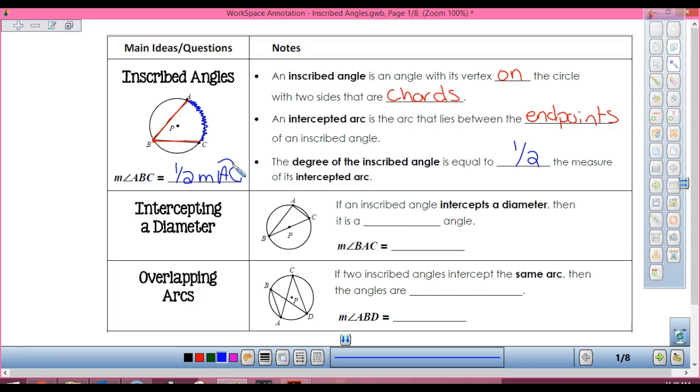If an inscribed angle intercepts the diameter, then it is what kind of angle? So let's look at this. If it intercepts the diameter, how many degrees does this arc? 180. So the angle is half of that. So it's what kind of an angle? Right angle. That's half of the arc, or half of 180 is 90. So the measure of angle ABC is 90 degrees.